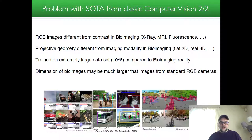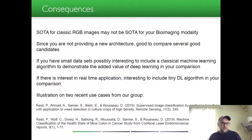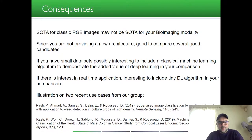The dimension of bioimages may be much larger than images from standard RGB cameras — that is the case for MRI — but it might also be the case when looking from a top view at individual plants, where each plant may have a dimension much smaller than typical ImageNet images. As a consequence, state-of-the-art algorithms for classic RGB images may not be state-of-the-art for your bioimaging modality.